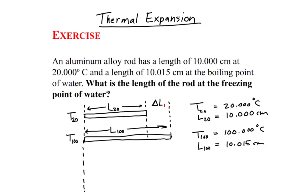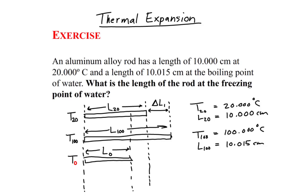We see that for this temperature difference between 20 degrees and 100 degrees we're going to have a difference in length. We expect the rod to shorten when its temperature is at the freezing point of water. We will call this new length L0 and the temperature T0. T0 is the temperature at 0 degrees Celsius, and L0 is the length of the rod at T0, which is unknown at this time.